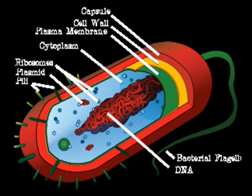Next there are the ribosomes, which consist of RNA. These are the messengers that carry instructions to the DNA, so they tell the cell what to do. These can only survive in cytoplasm, but I'm not going to go into too much detail on this.